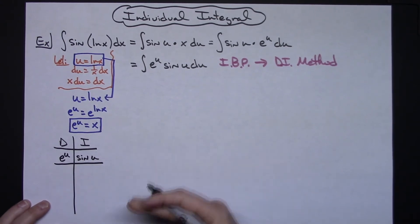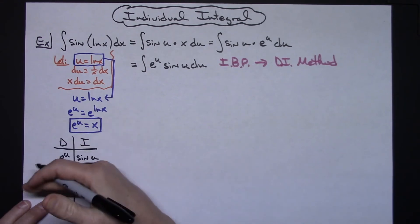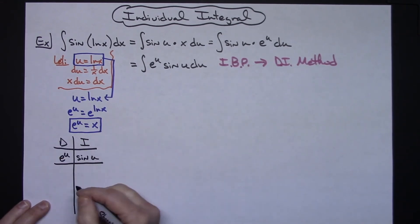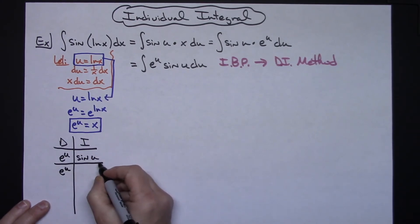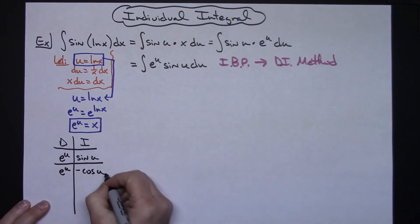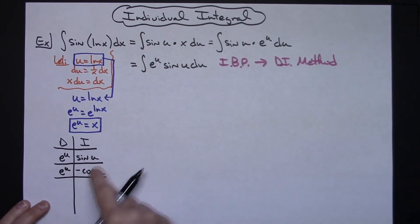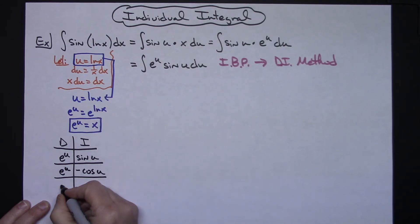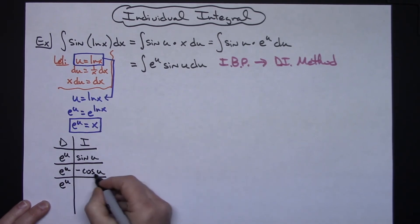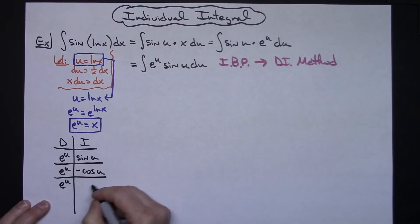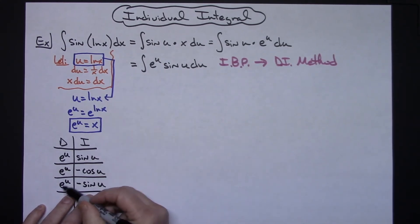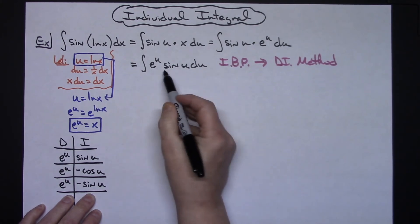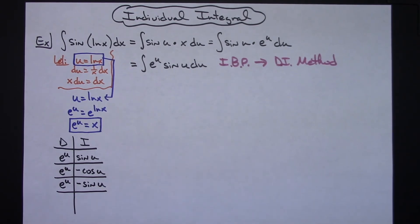I'm going to take the derivative and integral repeatedly until I come up with a matching term. Taking the derivative of e to the u gives e to the u; integrating sine(u) gives negative cosine(u). That doesn't match yet, so I do it one more time. The derivative of e to the u is again e to the u; integrating negative cosine(u) gives negative sine(u). Now I have a matching term — e to the u and sine(u) on both rows, so I can stop.